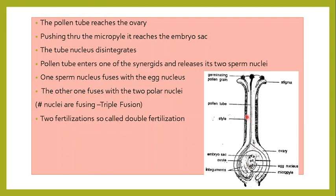To recap: the pollen tube reaches the ovary, goes down, passes through the micropyle, and enters one of the synergids. The tube nucleus disintegrates, and the two sperm nuclei are released. One sperm nucleus fuses with the egg cell, and the other fuses with the polar nuclei. At the center three nuclei fuse — that is triple fusion — and here one sperm nucleus fuses with the egg cell. Two fertilizations take place, so it is referred to as double fertilization.